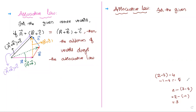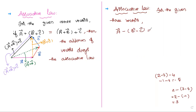So it does not obey the associative law. Numbers themselves are not obeying it, so it is a waste of time checking vectors. Directly we can write: for the given three vectors, A-bar minus B-bar minus C-bar is not equal to A-bar minus B-bar minus C-bar grouped differently. It does not obey the associative law.